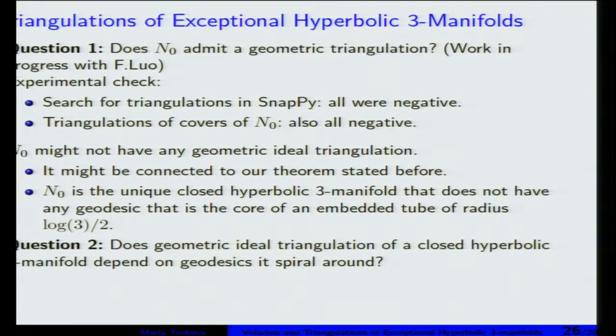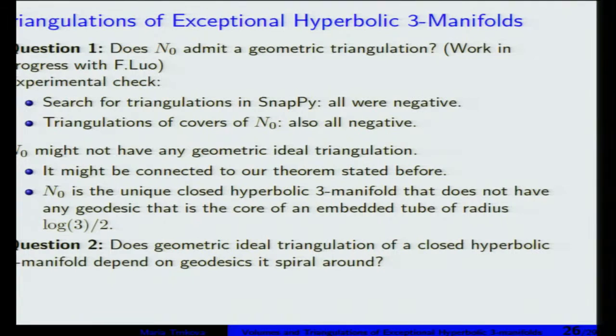The question I mentioned: does manifold N0 admit a geometric triangulation? Experimentally we looked for many triangulations in SnapPy and they were all non-geometric. We tried changing the geodesic being spiraled around, drilling out some geodesic and retriangulating, and triangulations of covers — all non-geometric. Our intuition is that the answer is negative. It's interesting that Vol3 is unique among all closed hyperbolic 3-manifolds in not having this three-tube radius. Is there some relation between geometric triangulations of closed manifolds and the geodesic they spiral around?